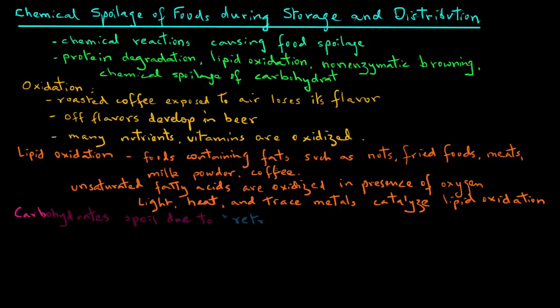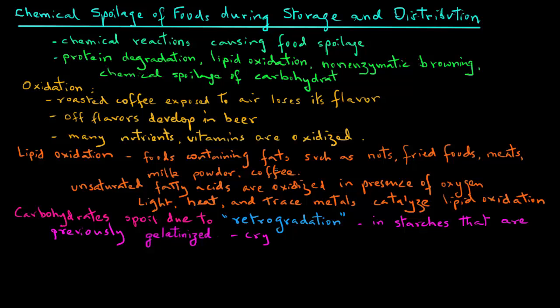Carbohydrates often spoil due to what is called retrogradation, as well as browning reactions. Retrogradation occurs in starches that have been previously gelatinized. During gelatinization, the crystal structure of starch is lost, but during retrogradation, the crystals begin to form again due to their re-association.